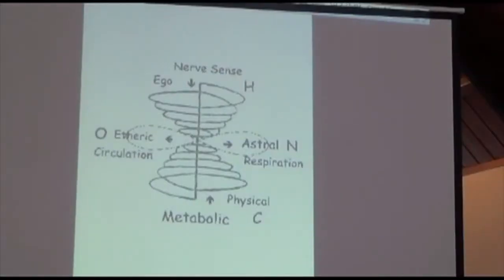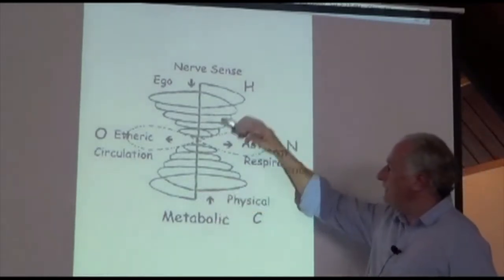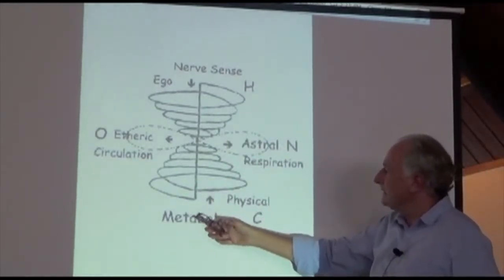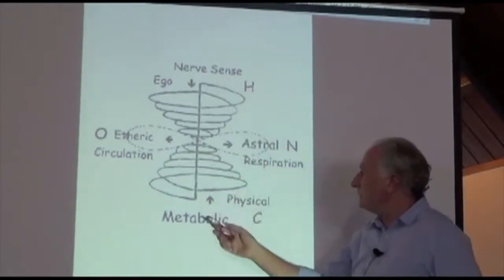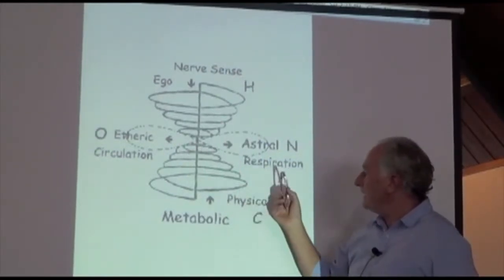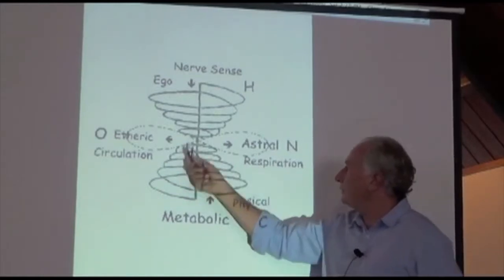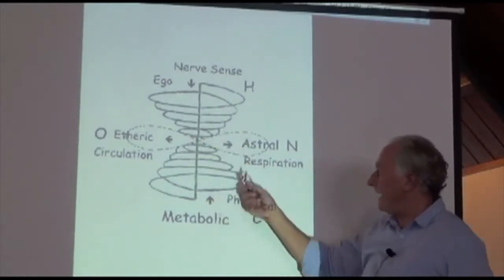So this is where we come to this picture here, that we have all of these activities basically in one place. We have the nerve sense system and the metabolic system and the rhythmic system, and then we actually have these physical activities that link into that.